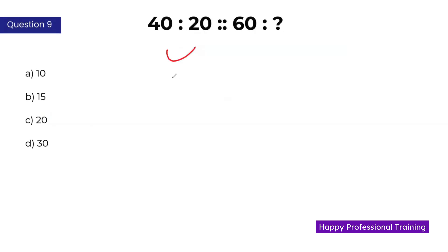The second number is obtained by dividing the first number by 2. So 40 by 2 is 20. Similarly, do it for the second one: 60 by 2 is 30. So D is the correct answer.